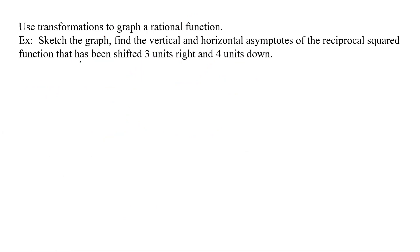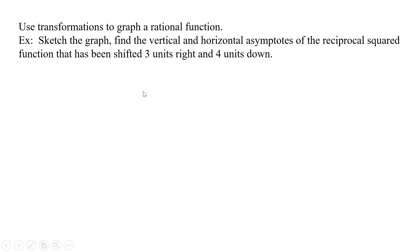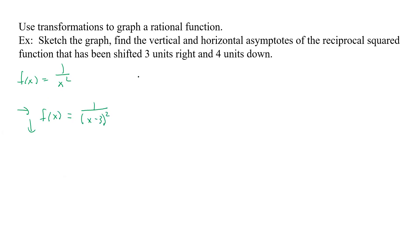Now we're going to use transformations to graph a rational function. Since we've already looked at 1/x², we know what it looks like. The problem says sketch the graph and find the vertical and horizontal asymptotes of the reciprocal squared function shifted three units to the right and four units down. So we rewrite that as f of x equals 1/(x−3)² − 4, starting with 1/x², shifted three units right and four units down.